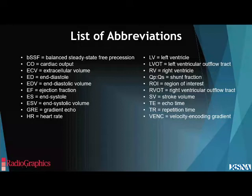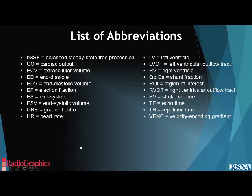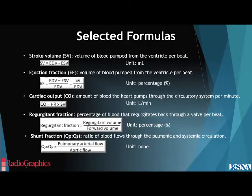Some abbreviations we'll be using are listed here. BSSF refers to balanced steady-state free precession, GRE is gradient echo, RVOT is right ventricular outflow tract, and the same for LVOT and so forth. Some of the key formulas covered will be explained a bit later.